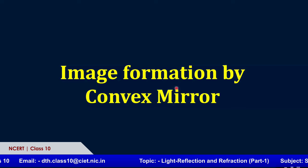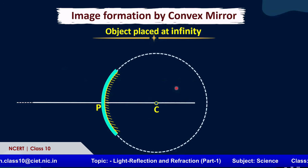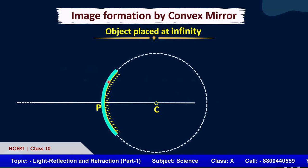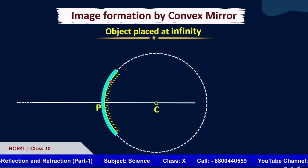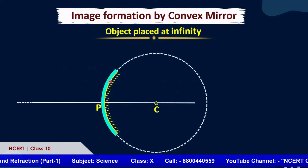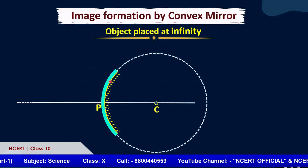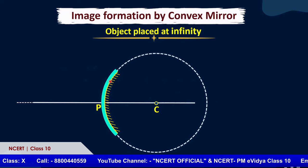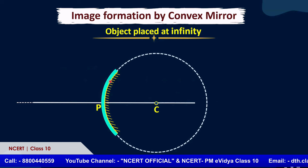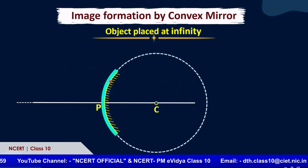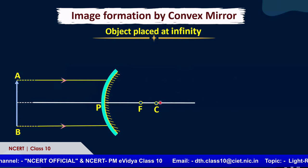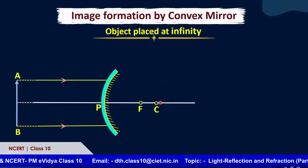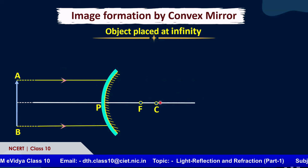For a convex mirror, the reflecting surface is curved outwards — the blue surface shown is the reflecting surface. This is the convex surface. This is the center of curvature. When an object is placed at infinity, parallel rays are coming, but these rays cannot focus on a single point because they get diverged.